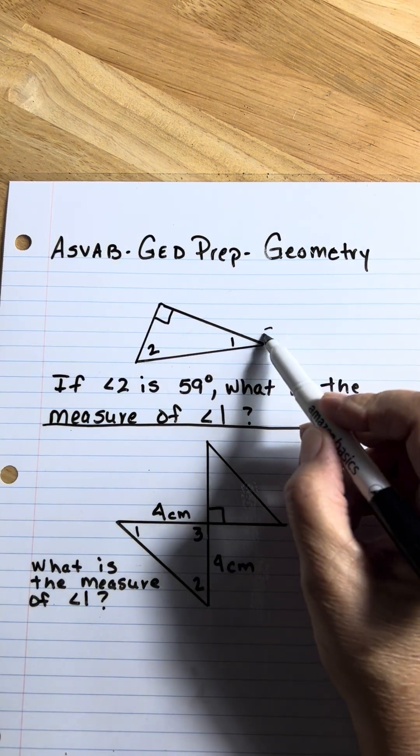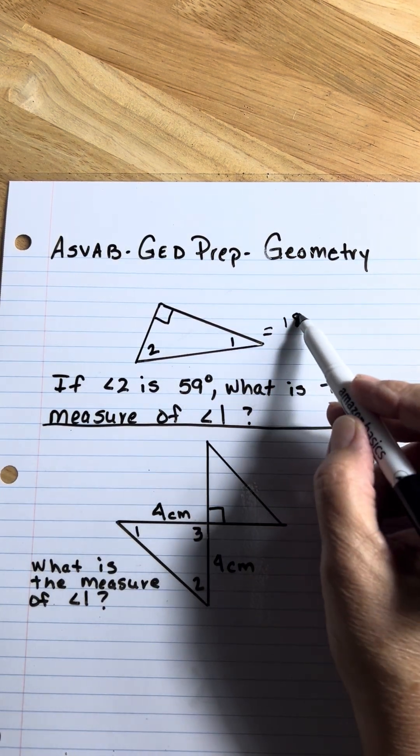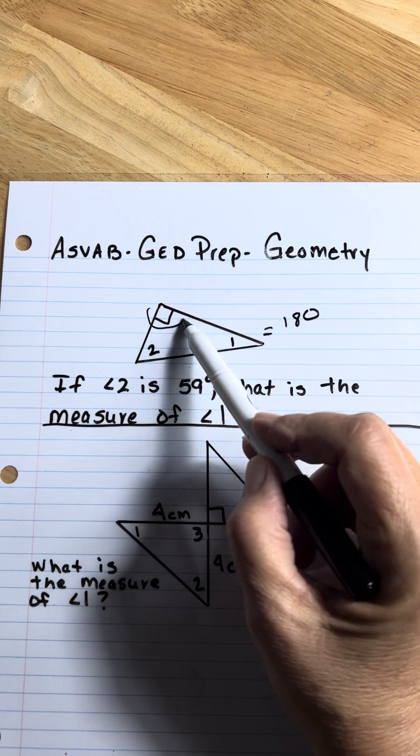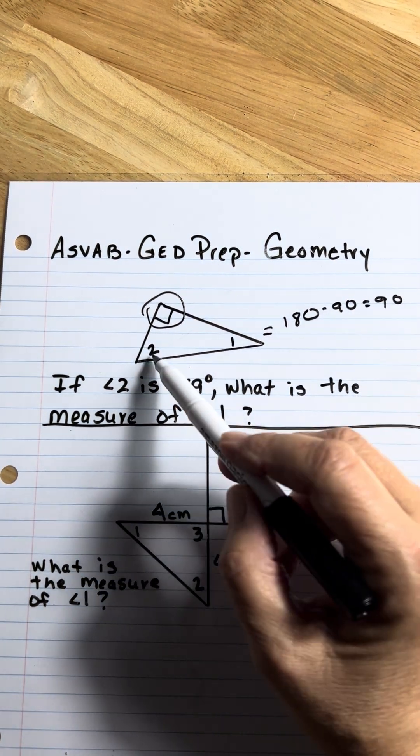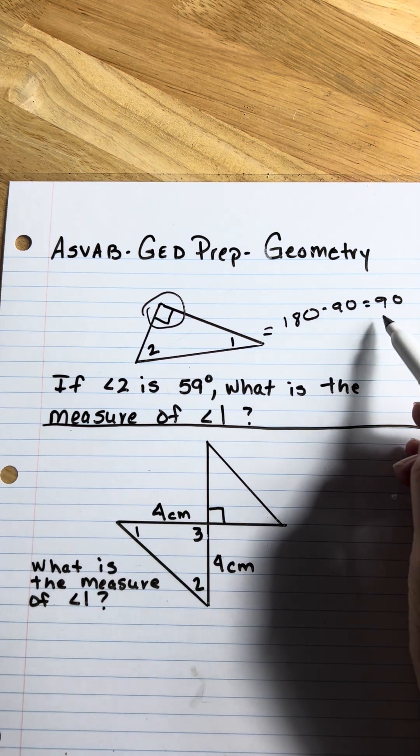The sum of all the degrees in a triangle is 180. This mark right here means that angle is 90 degrees. So you have 90 degrees to split between the other two.